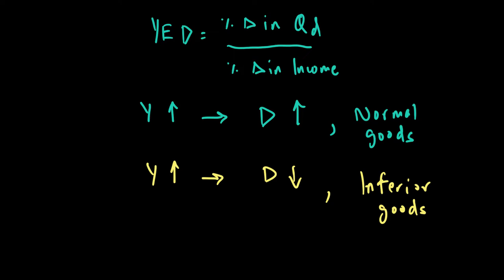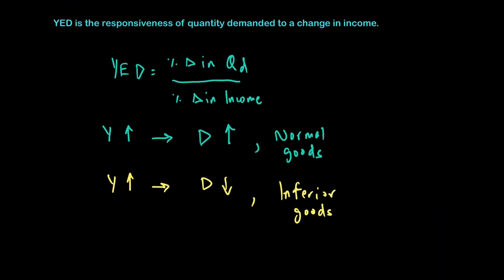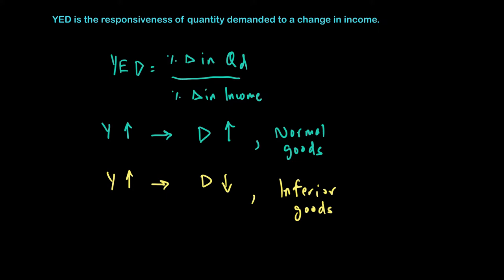Inferior goods are those which are not desirable for people with higher income, because they then move on to better or more expensive substitutes. If you look at the value of YD: if income is going up and demand is also going up, as in the case of normal goods, then YD will be positive. If income is going up but demand is going down, the numerator is negative while the denominator is positive, so the value of YD will be negative.